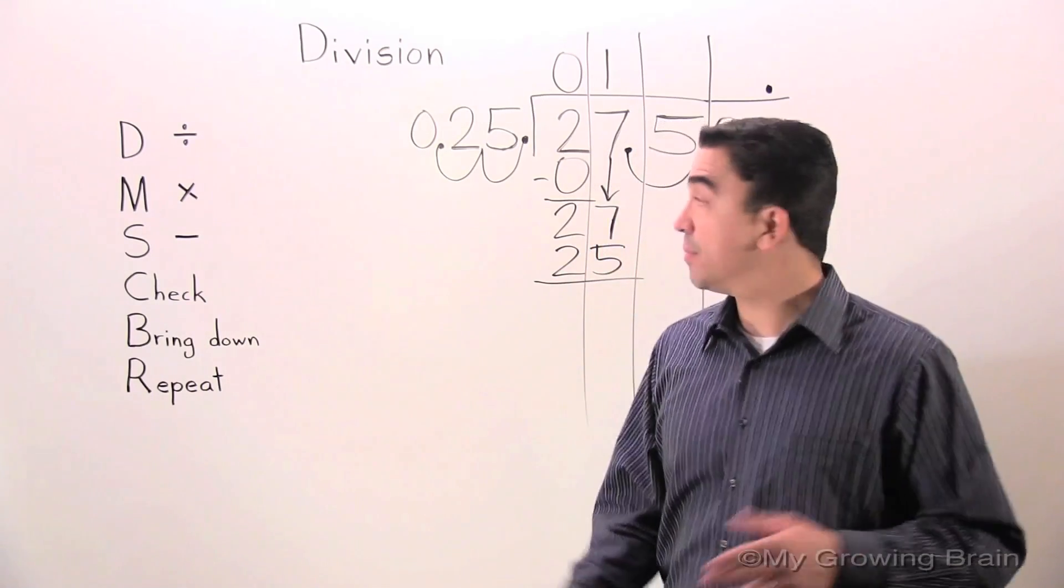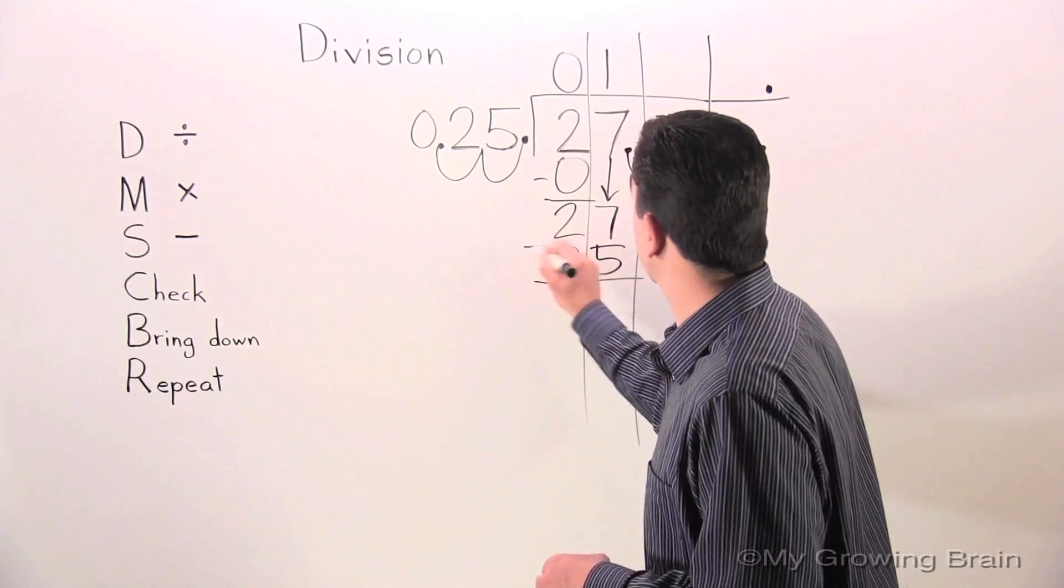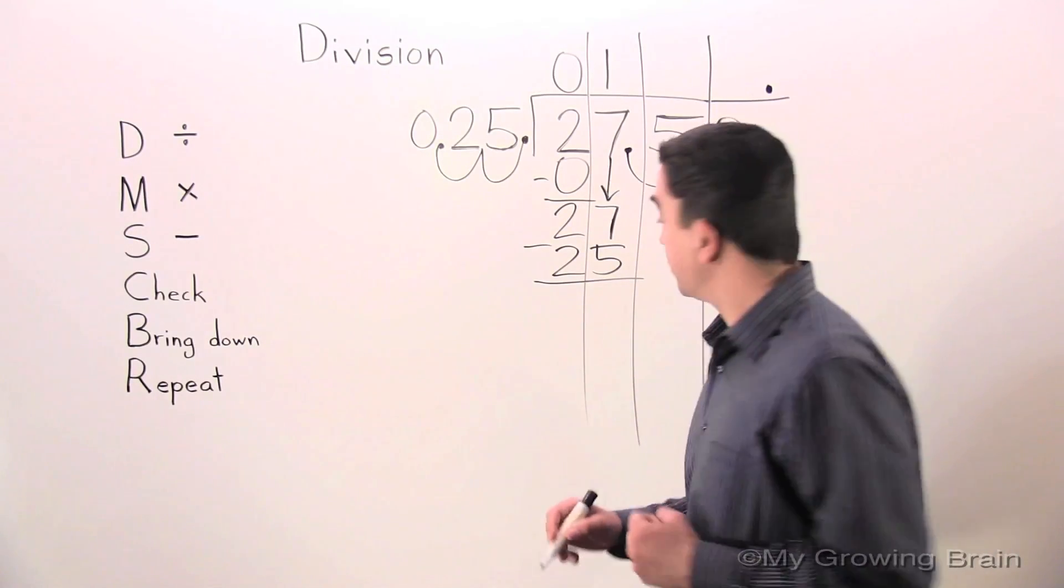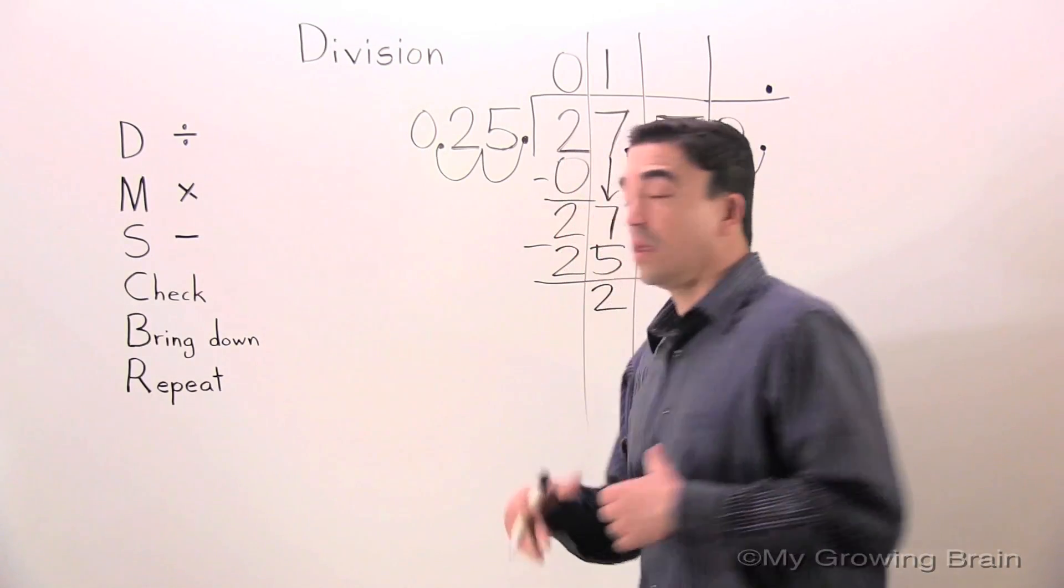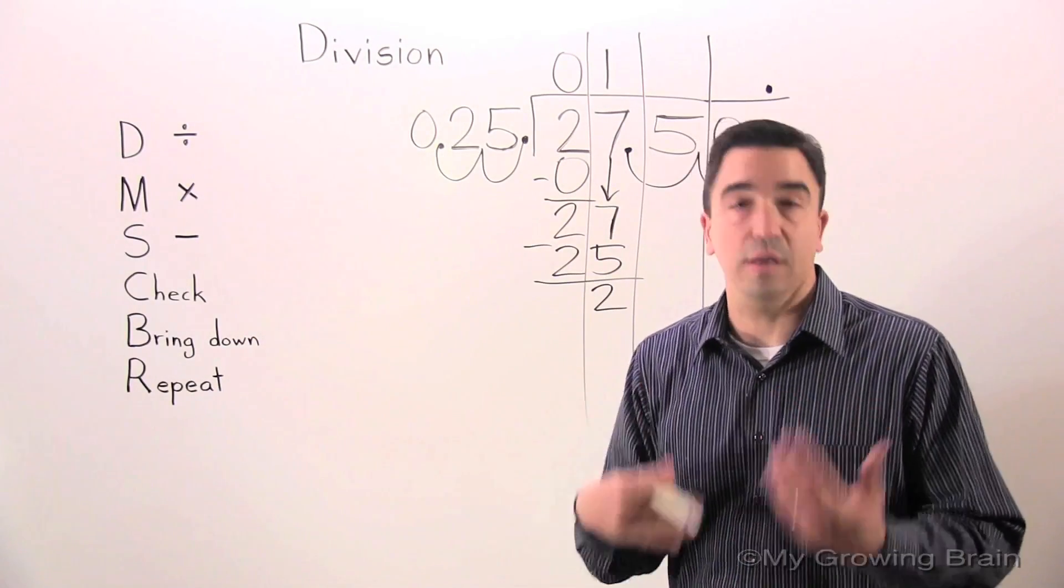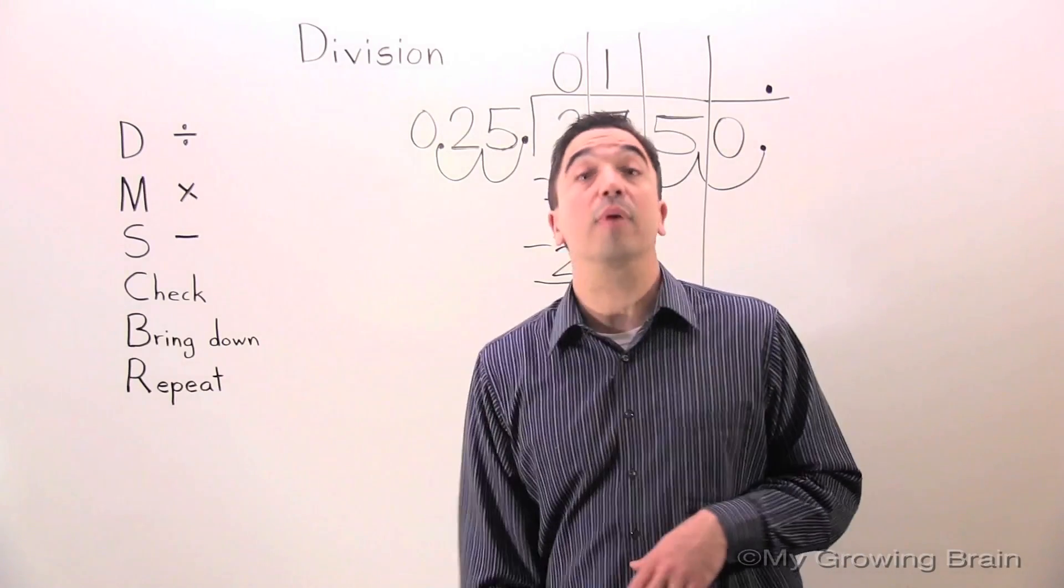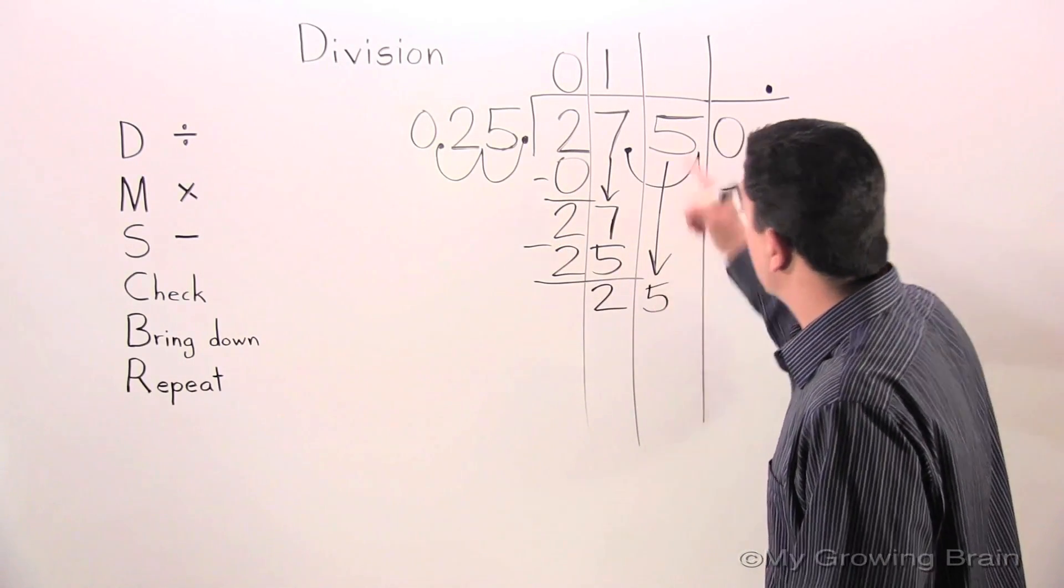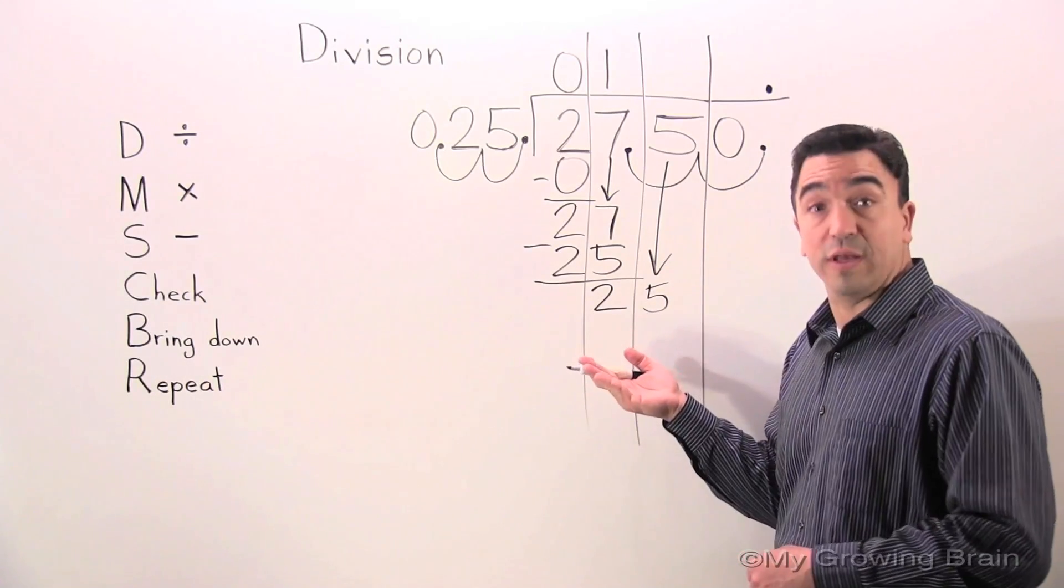Next step. Subtract. 27 minus 25 equals 2. Next step. Check. 2 is less than 25. Keep on going. Next step. Bring down. Bring down the 5. 25.